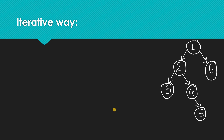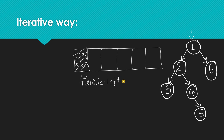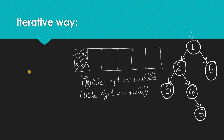So how will we find the number of leaves in the tree in an iterative way? As we already know, for level order traversal we need to use a queue. We will start from the first element, push it into the queue, then pop or dequeue our element. After this, we will check if node's left equals null and node's right equals null.